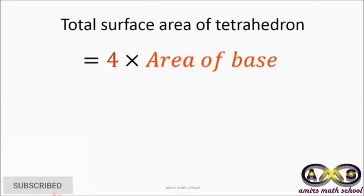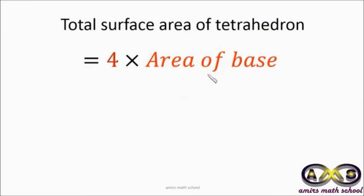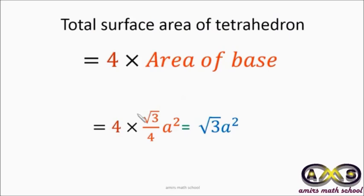Now we find the total surface area of the tetrahedron. Since a tetrahedron consists of four equilateral triangles, we find the area of one face and multiply by four. The area of one equilateral triangle is (√3/4) · a², so the total surface area is 4 × (√3/4) · a² = √3 · a², where a is the edge length of the tetrahedron.